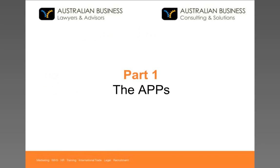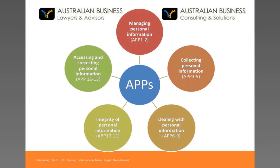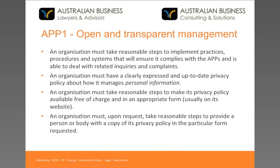There are 13 APPs, and they can be generally categorised into five groups. The first regards a very broad overview of how you're supposed to manage personal information. Practically speaking, this is embodied by having a privacy policy that complies with the obligations under the APPs. Obligations include making it freely available — typically on your website — so anyone can access it free of charge. This privacy policy forms the backbone of your organisation's compliance with the Act, containing the processes and procedures your organisation proposes to put in place.